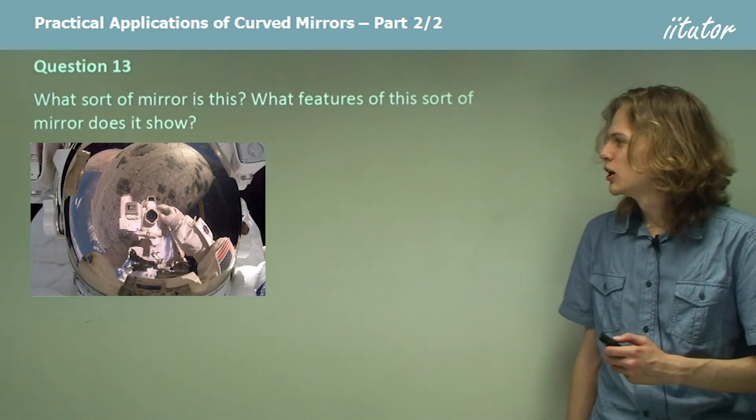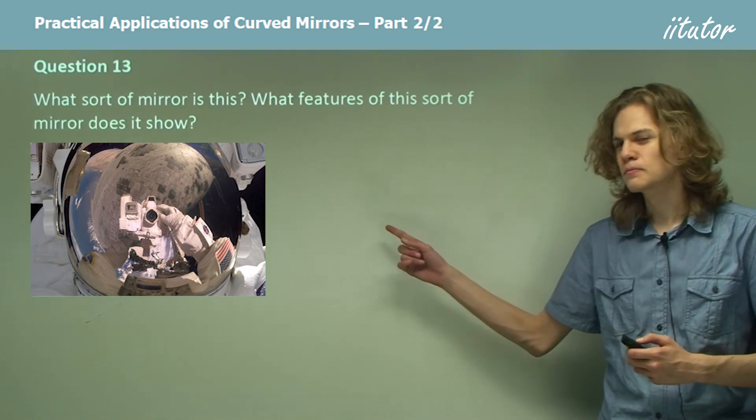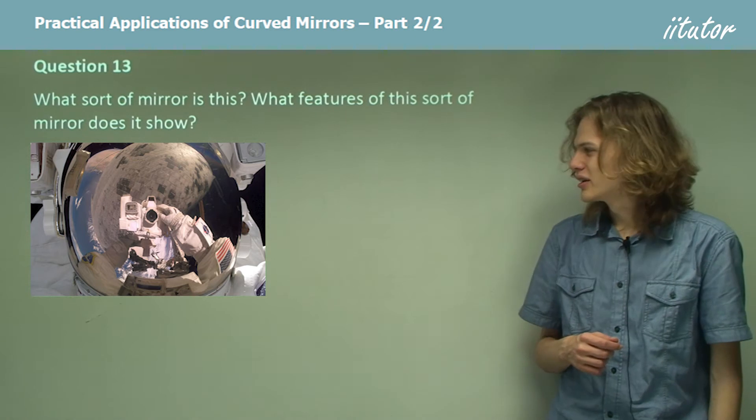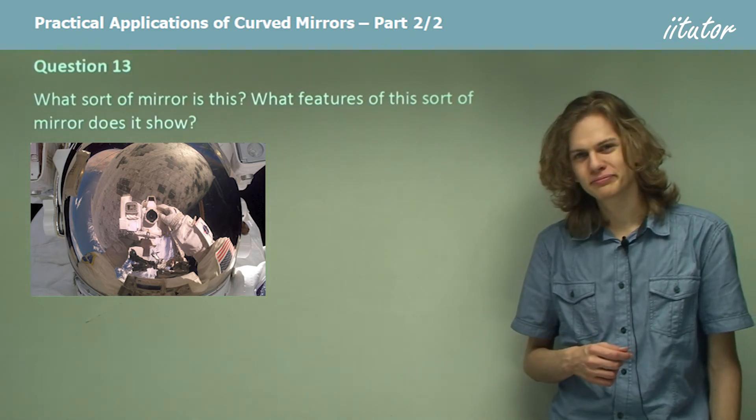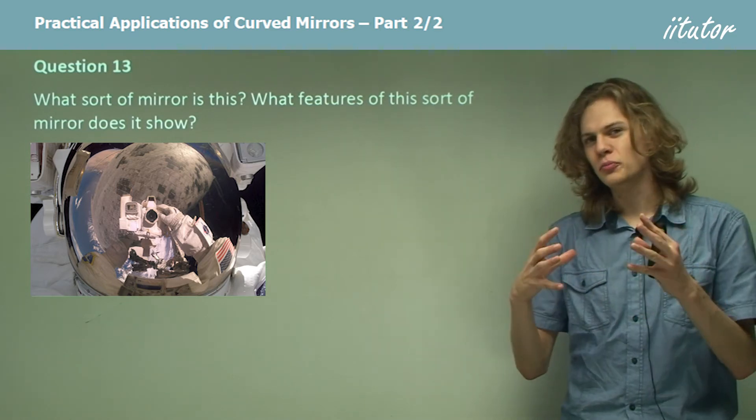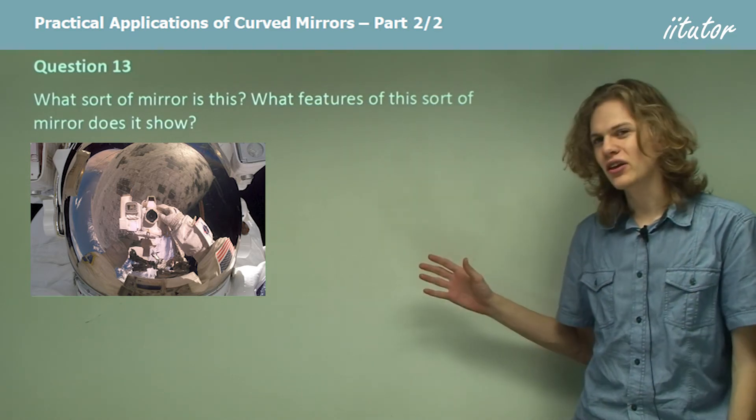Question 13. What sort of mirror is this? What features of this sort of mirror does it show? Can you tell what this is a picture of? It's the helmet of an astronaut.